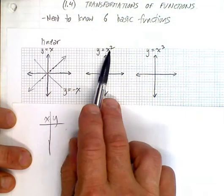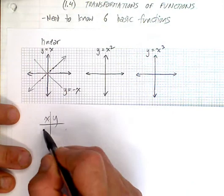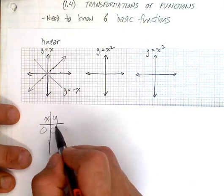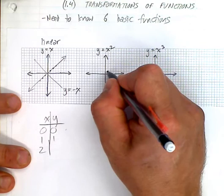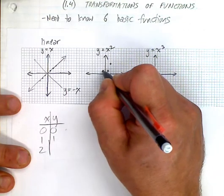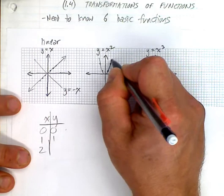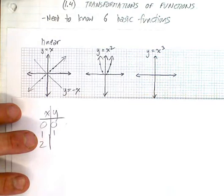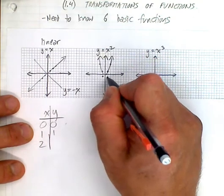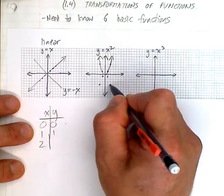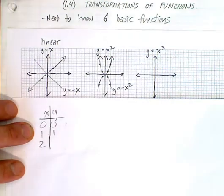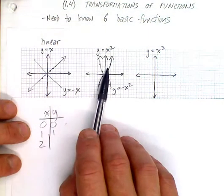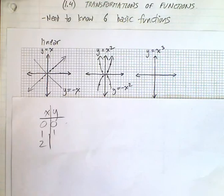This one here, x squared, is a quadratic function. If you did a table of values, x is 0, y is 0. If x was 1, y is 1. If x is 2, what's 2 squared? 4. 0, 0, 1, 1, 2, 4 is a parabola. This is something we looked at in quite a bit of detail in grade 11. If you remember, how can we make this go upside down? Just like we can flip this, you put a negative up front.